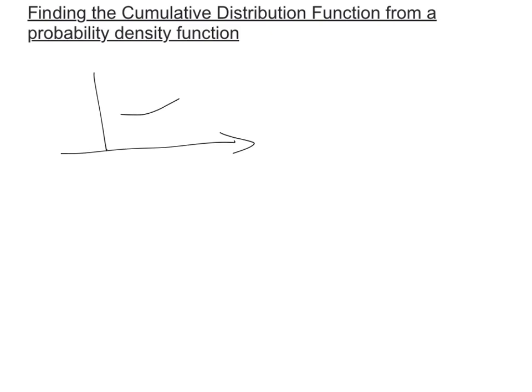In this video, we're going to be finding the cumulative distribution function from a probability density function. If we have a probability density function between 2 and 5, our cumulative distribution function will be a different function that tells us the cumulative probability up to a certain value. Whatever we input into our function will tell us the cumulative probability up to that point.